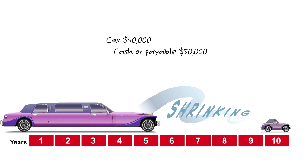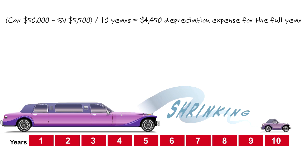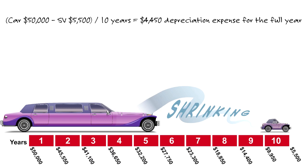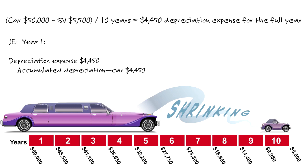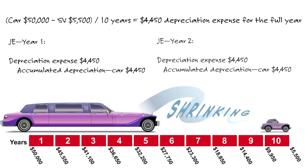When you buy PP&E, that's an investing outflow. Using straight line: $50,000 minus the salvage value of $5,500, divided by 10 years, gives annual depreciation of $4,450 each and every year. In year one, journal entry: debit depreciation expense, credit accumulated depreciation, $4,450. Year two, exact same thing — $4,450. You do that every year for 10 years. Total accumulated depreciation: $44,500.